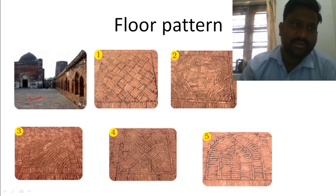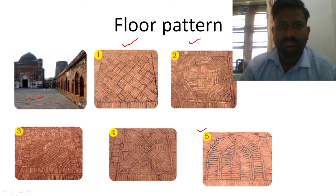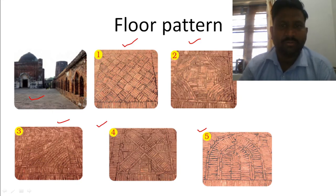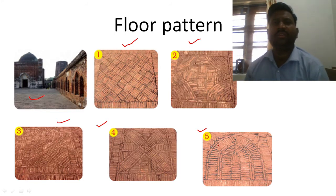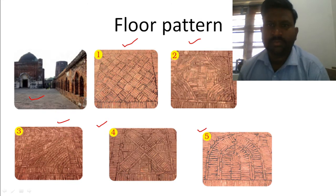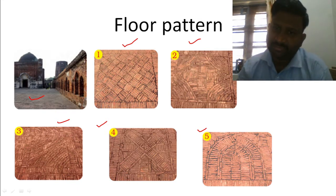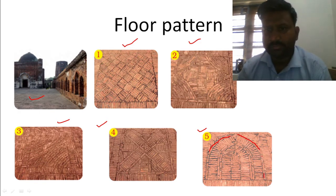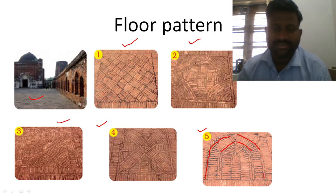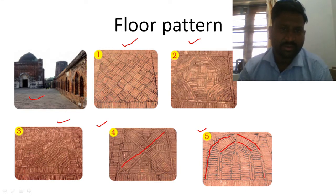There are different floor patterns: floor pattern one, two, three, four, and five. Observe floor pattern five — here is an arc, again an arc, then straight down, and here is an arc. Some temple-like structure is there. Now see design number four — a cross is there, made with bricks.